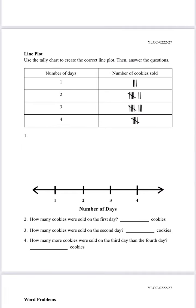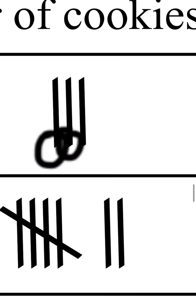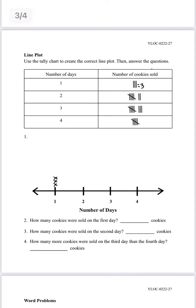For this part we have a line plot and we need to use the tally chart to create the correct line plot, then answer the questions. For number one on the chart we have one, two, and three, so we need to put three x's above number one. For number two, we add five and two, which is seven, so we need to put seven x's above number two.